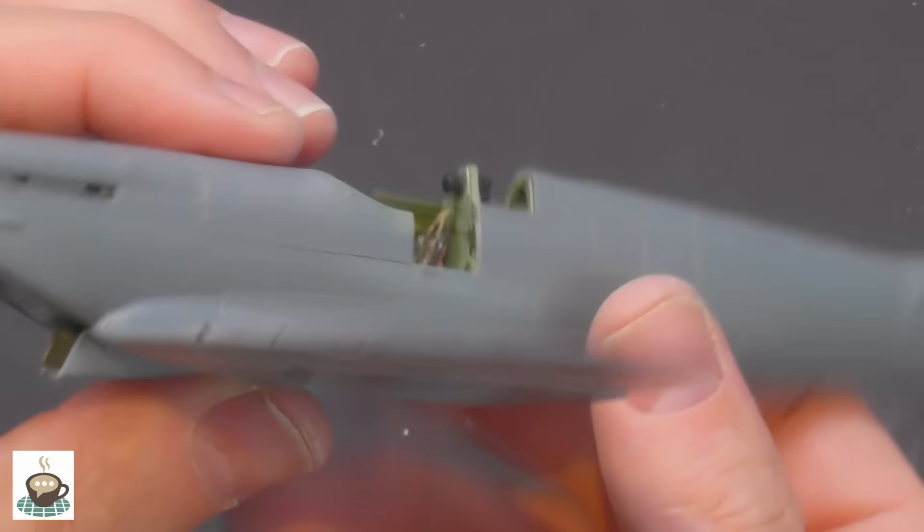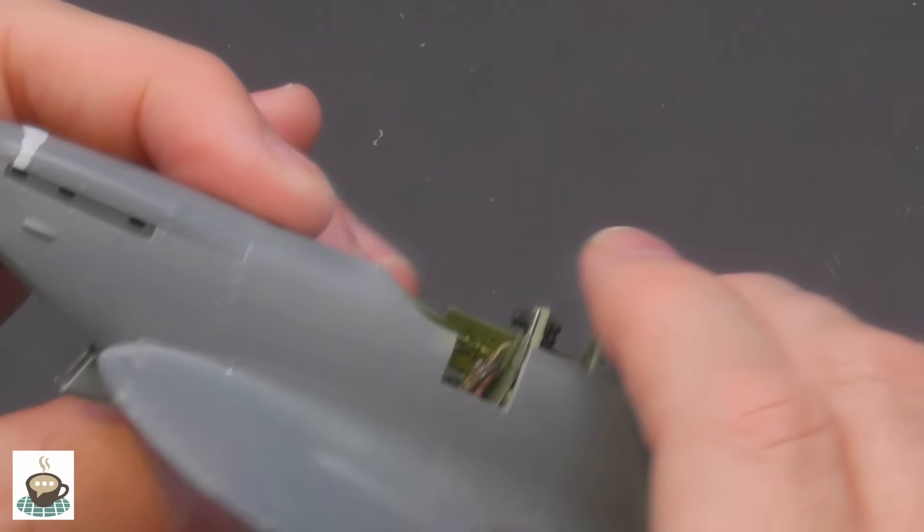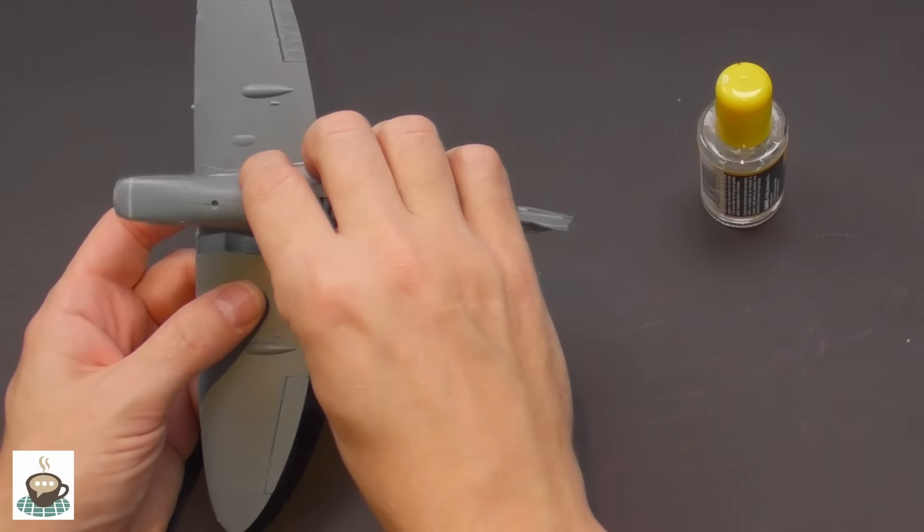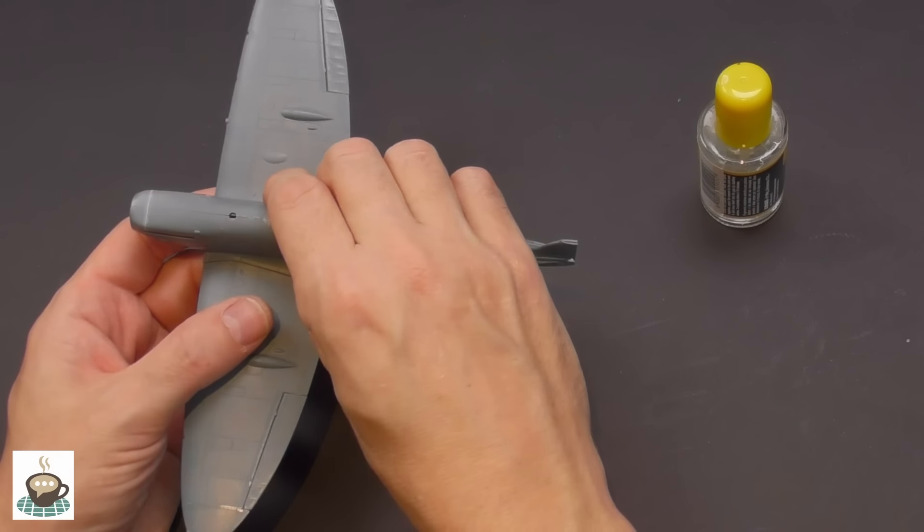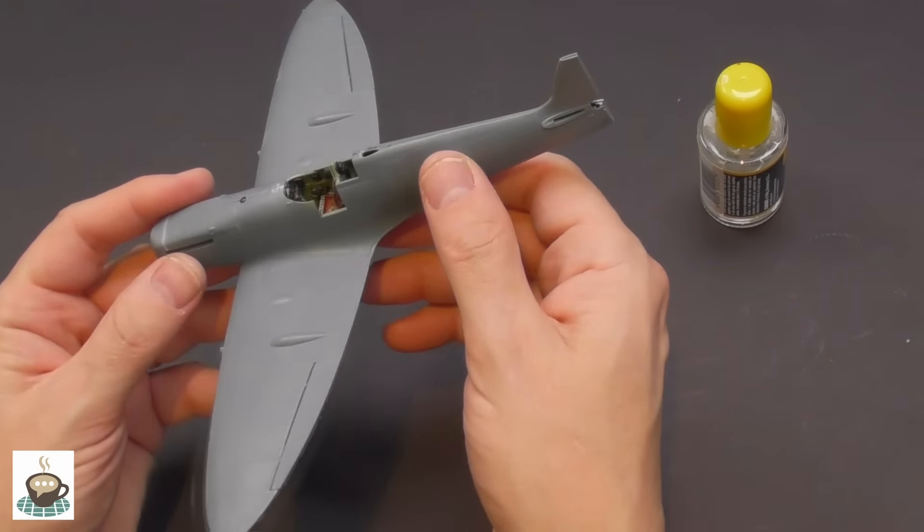Again, test fit, test fit, test fit. That's looking good. So the instructions would have you build the entire tropical filter and then just add it to the airframe, but I decided to do it this way just to try and help the fit.